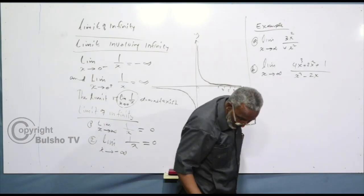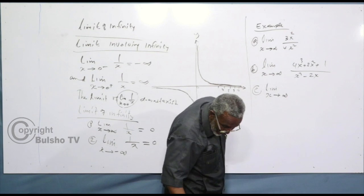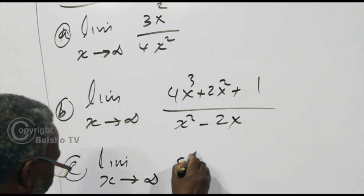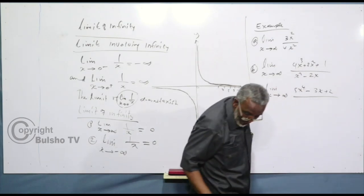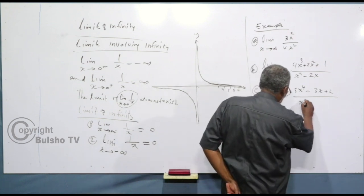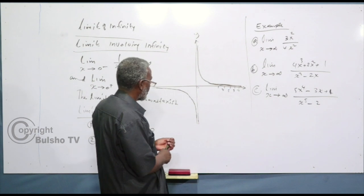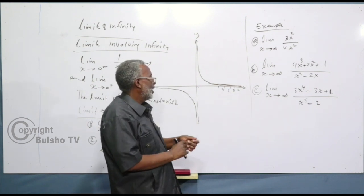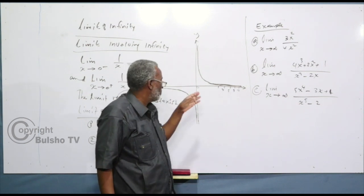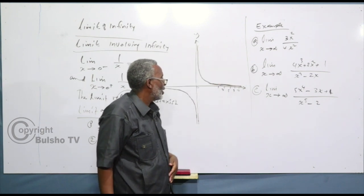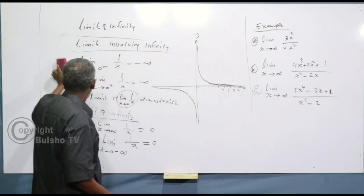Divided by minus 2x. Lim, x approaches 2. Five x to the power 4. Three x squared, five x squared. The rest are on the other x side. From there we can take over the x. The x side — double. Next, many x terms for the x. Thank you very much.